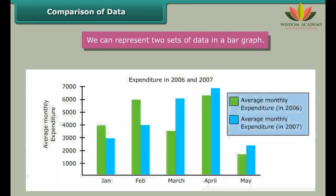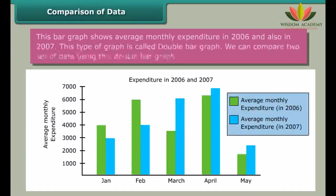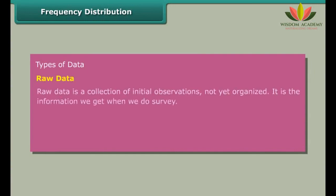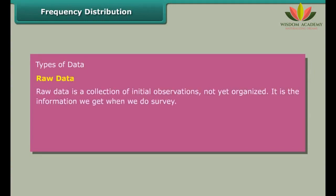Comparison of data: We can represent two sets of data in a bar graph. This bar graph shows average monthly expenditure in 2006 and also in 2007. This type of graph is called double bar graph. We can compare two sets of data using this double bar graph.